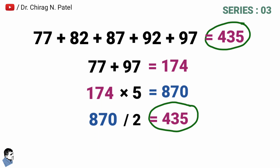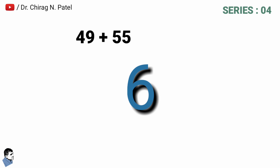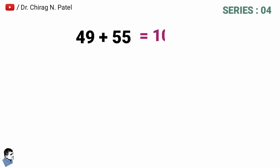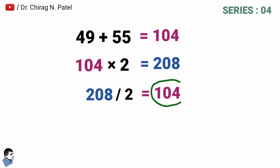If only two numbers are there, you can also use this trick. For example, the series is 49 and 55, with a difference of 6. So 49 + 55 = 104. Then multiply that answer by 2: 104 × 2 = 208. Divide 208 by 2 = 104. That is the correct summation of the two numbers.